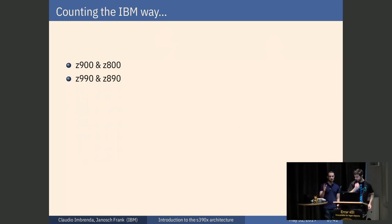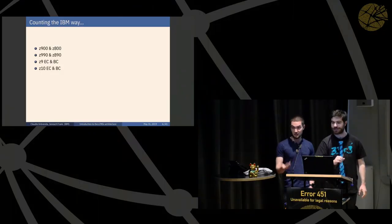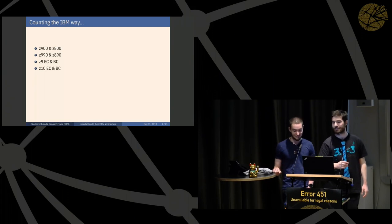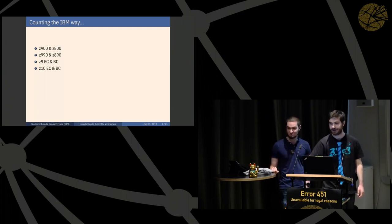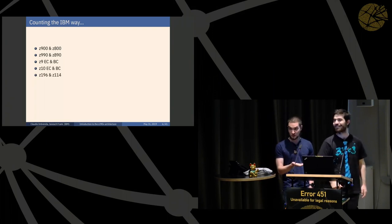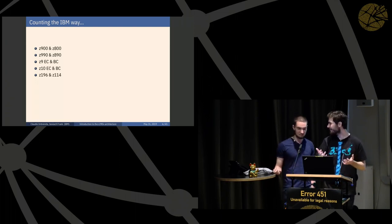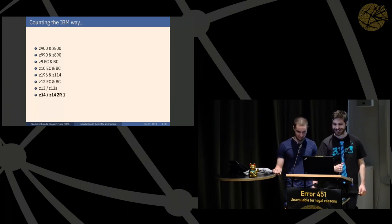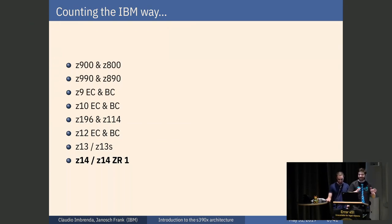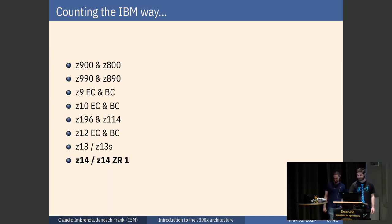The 900 models are the big machines with a lot of cores, the 800 ones are small machines, then they added 90 for the next generation. EC stands for enterprise class — the big ones — and BC is business class. After that came models 10, 12, 13, 14. Every time a new machine comes out, we ask ourselves what numbering scheme they'll use next. They've been quite sensible lately — let's hope for the best.